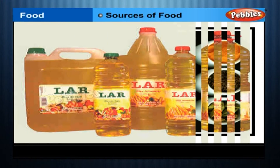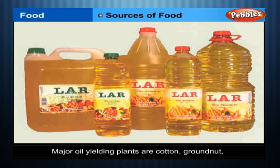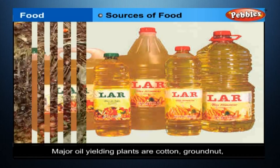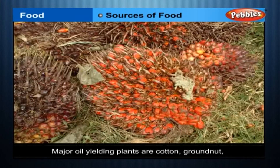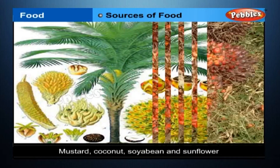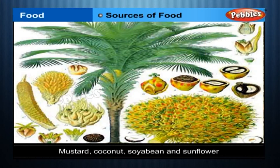Oils. Major oil-yielding plants are cotton, groundnut, mustard, coconut, soya bean, and sunflower.